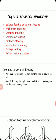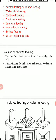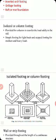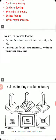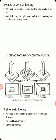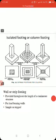Isolated or column footing means we provide a foundation under each column. It is provided for columns to transfer the load safely to the soil. Isolated footings are of three types: single footing, stepped footing, and sloped footing. Single footing is for light loads and stepped footing is for medium and heavy loads. The figures show a cross-section and perspective view — first is single footing, second is stepped footing, and third is sloped footing.